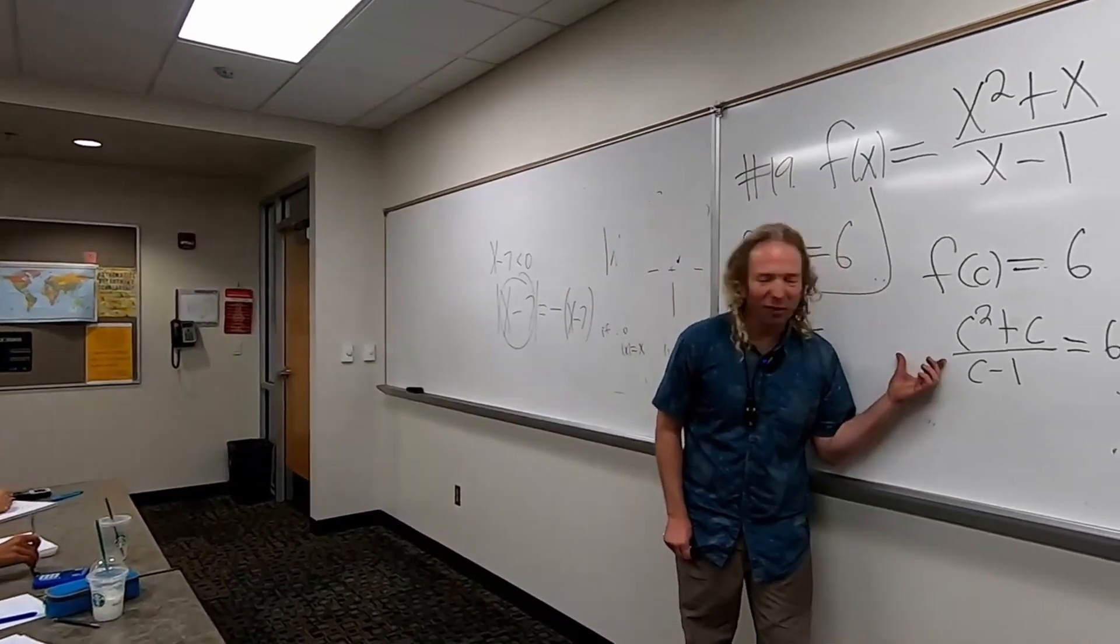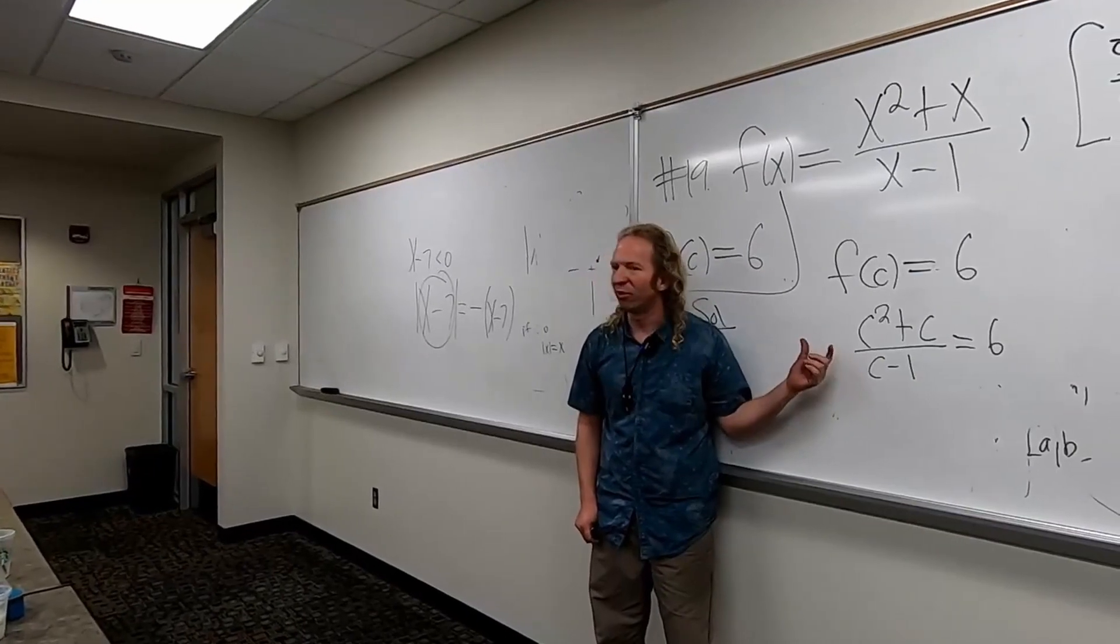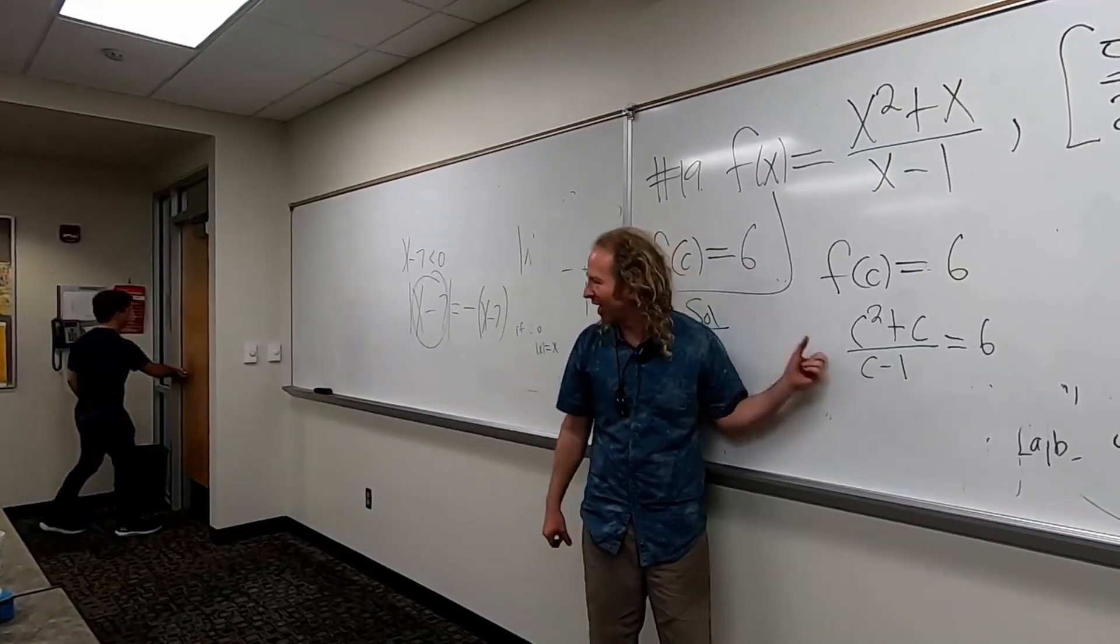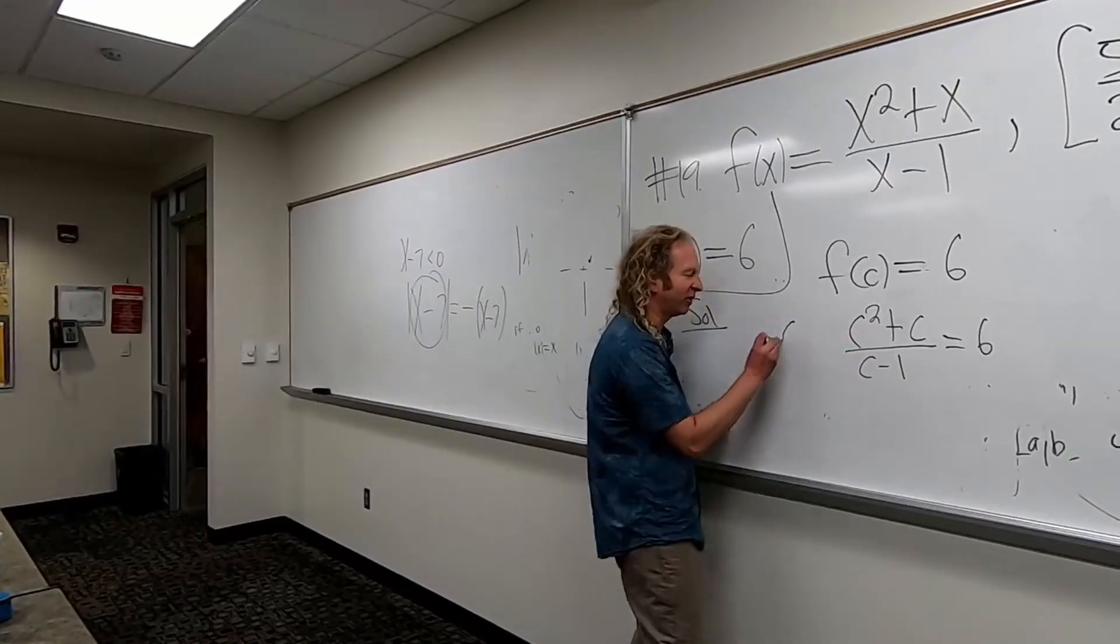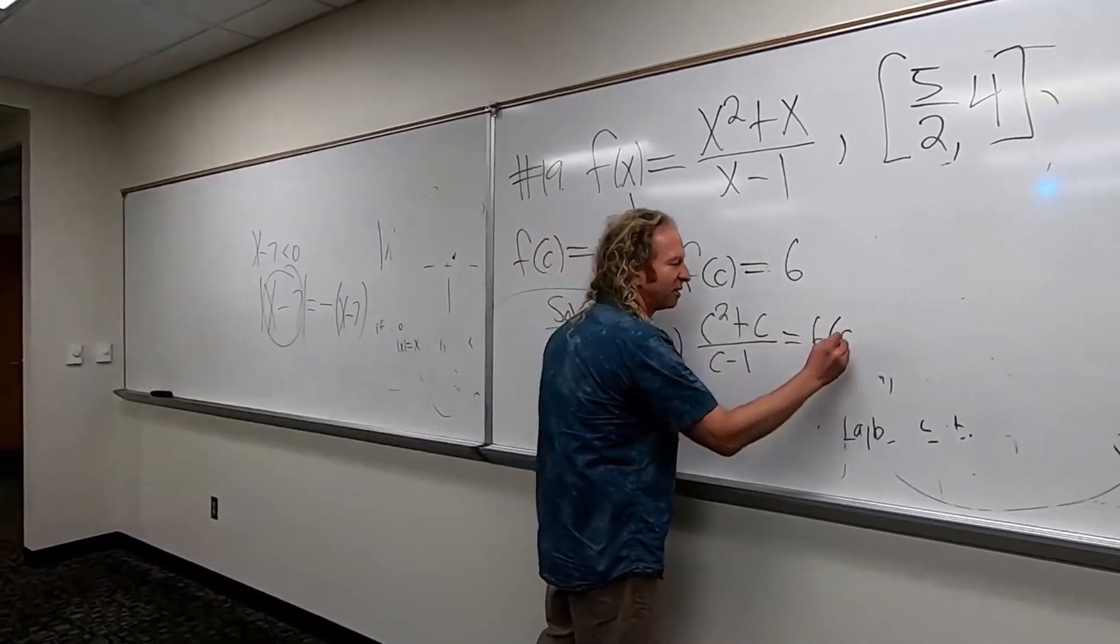All right, so what do we do next? This is where some people got stuck, I think. What do you do? Multiply. Yeah, by C minus 1 on both sides, right? Very good. C minus 1.